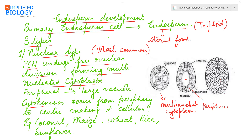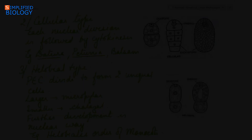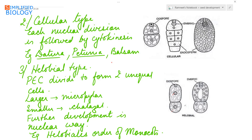This makes the endosperm cellular. Best examples of nuclear type are coconut, wheat, rice, and sunflower. In the coconut example we see in daily life, the coconut milk or coconut water which is highly nutritious is the multi-nucleated cytoplasm, and the white coconut that we eat is the cellular endosperm.